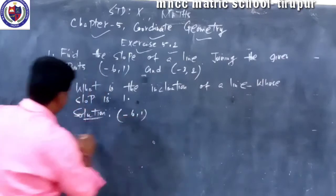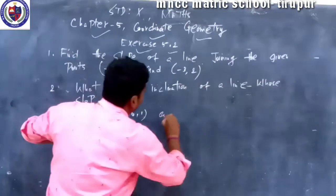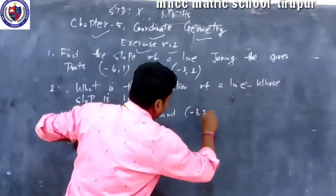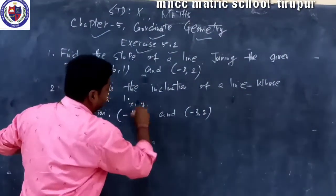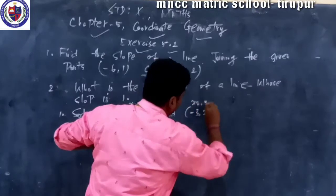Minus 6 comma 1 and minus 3 comma 2. Point is the name mark. First, x1, y1. Second one, x2, y2.